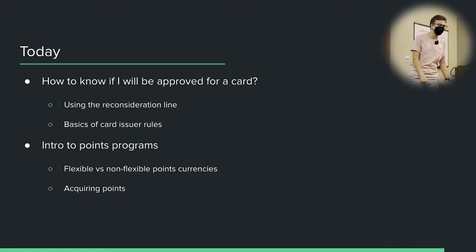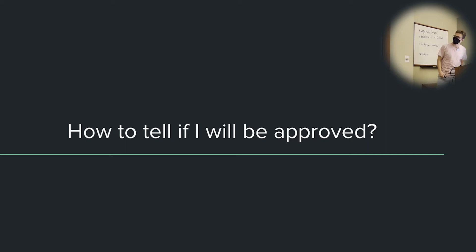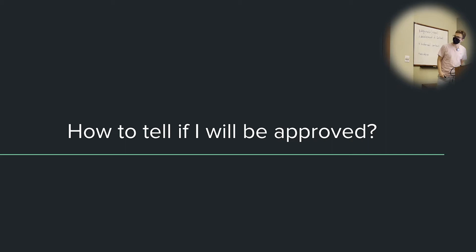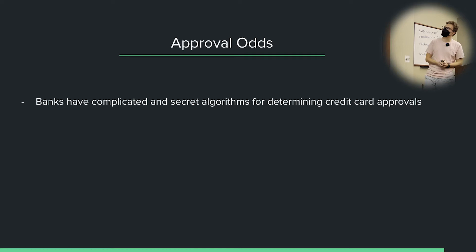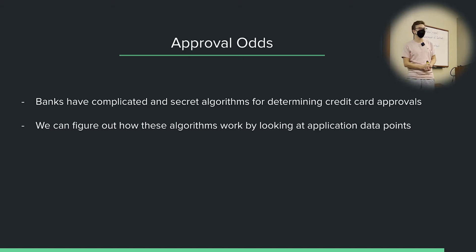We're also going to talk about flexible versus non-flexible points currencies — not all points are created equal, and there are advantages and disadvantages to each. And then we're going to talk about how to acquire some points. Banks have very complicated and secret algorithms to determine whether or not people are going to be approved for cards. These are kind of their secret sauce. However, we can look at data points online to see who is approved or denied for certain cards, and we can use that to figure out if people will be approved or not.